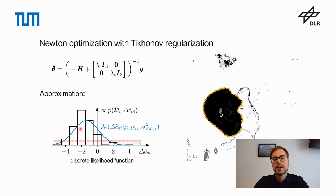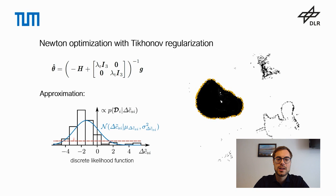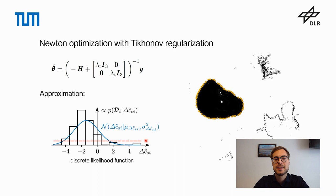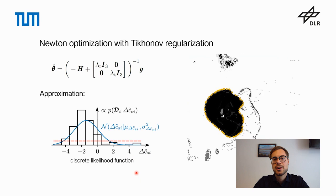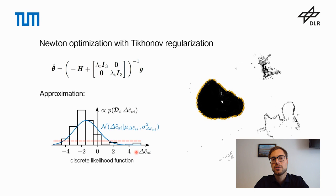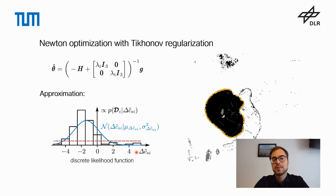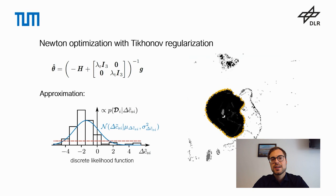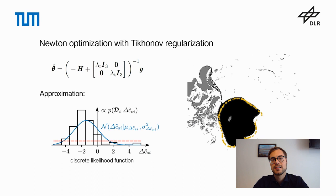If one of the values is below this threshold, we unfortunately cannot guarantee that the value is not heavily affected by noise. In such cases, it might even be possible that the first-order derivative points in the wrong direction. In those cases, we then use the approximated normal distribution in the calculation of the first-order derivative. For the second-order derivative, which is much more affected by noise, we always use the approximated normal distribution to calculate those second-order derivatives. As a result of those approximations, our algorithm becomes much more robust to image noise and to wrongly classified pixels.